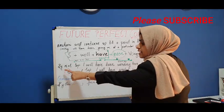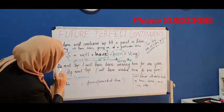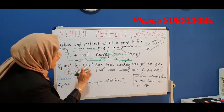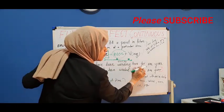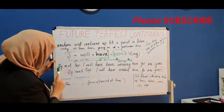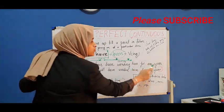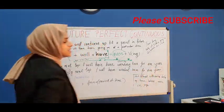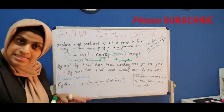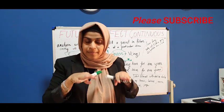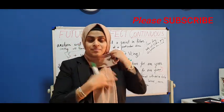In this example: 'I will have been working here for one year.' By next September, I will have been working here for one year. Let's say this is September right now.